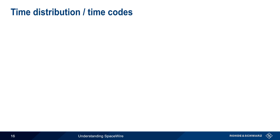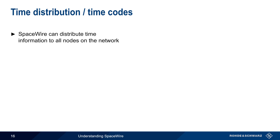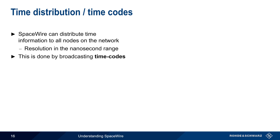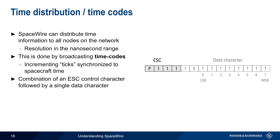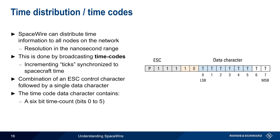In addition to initialization and flow control, SpaceWire also uses control codes to distribute time information to all nodes on the network, with resolution in the single nanosecond range. This is done by sending time codes, which encode an incrementing tick that synchronizes to spacecraft time. These time codes are made up of an escape control character followed by a single data character. After the standard two leading bits, this data character contains a 6-bit time count in bits 0 to 5, as well as two control flags in bits 6 and 7, which are always set to 0.